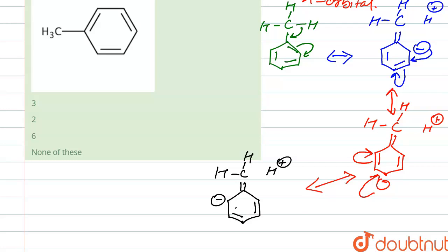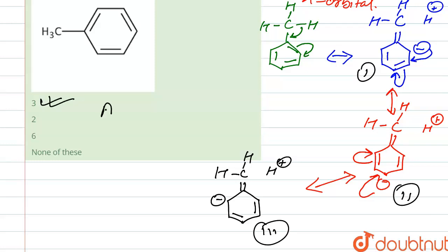So this completes the hyperconjugation in toluene. The total number of hyperconjugation structures in toluene is three — structure one, two, and three. Therefore, the correct option is option A, that is three.